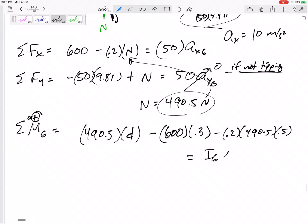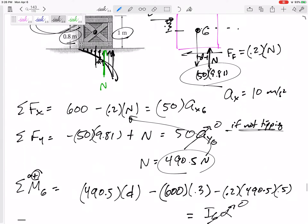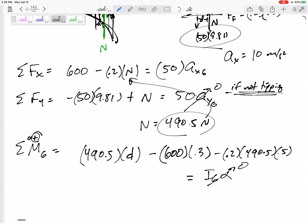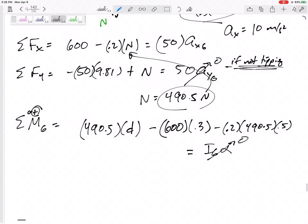All right. And sum of the moments equals i g alpha. Now I don't know what i g is, but my alpha is 0. If it is not tipping, right? If this is just in translation, there's no rotation, my alpha is 0. Okay. I do this equation and I get a distance d of 0.467 meters.